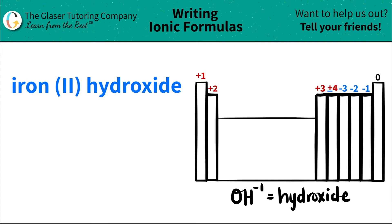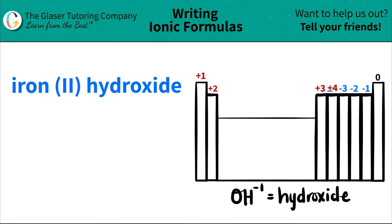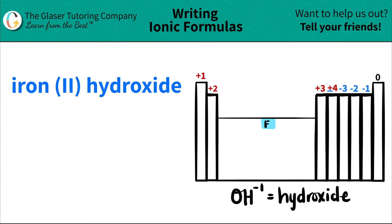Today we are going to be writing the formula for the ionic compound iron 2 hydroxide. So let's work from left to right. The first element I see is iron. I'm going to scan the periodic table and it looks like iron is right here, labeled as Fe. So I'm going to write that iron is Fe.